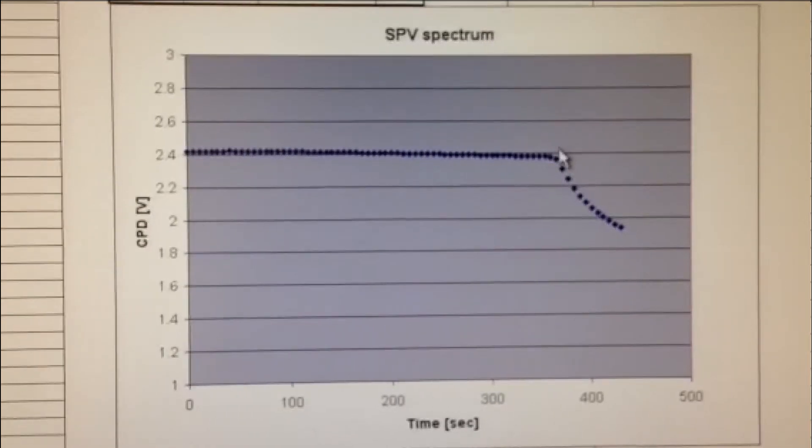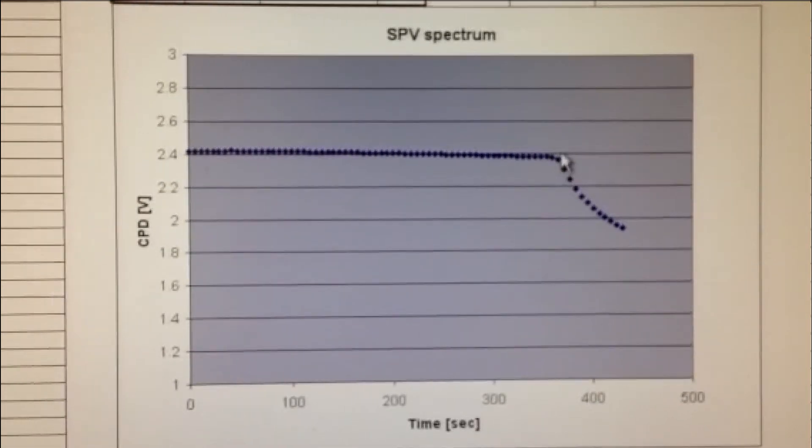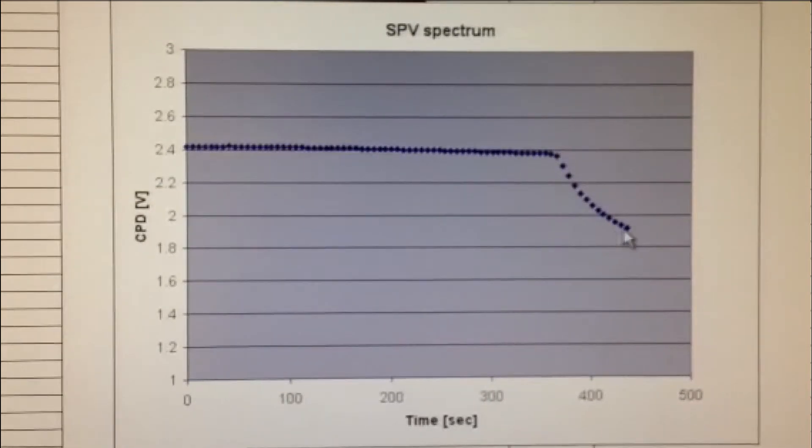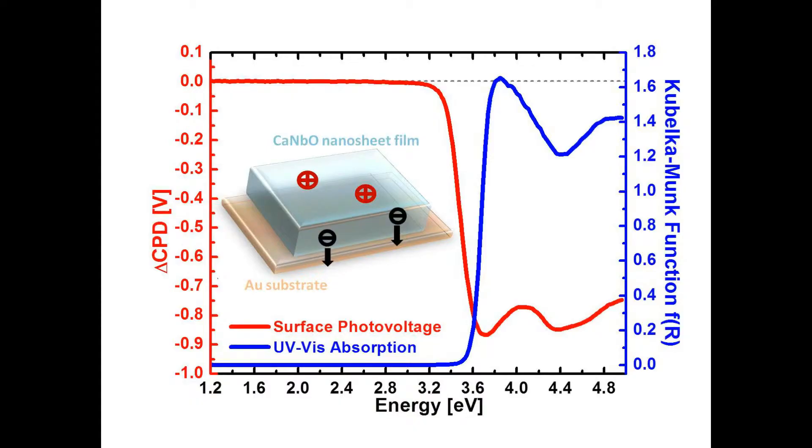As can be seen here, the raw data is first collected in the time domain and then converted to the energy domain for reporting. This figure shows the final SPV spectrum with the change of CPD value plotted as a function of energy. Typically, the onset from SPV spectrum can be correlated to the band gap of the material.